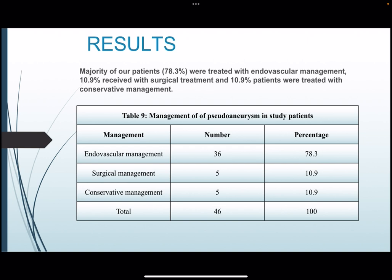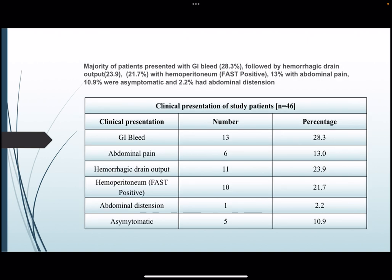Results: The majority of patients were treated with endovascular management at 78.3%; 10.9% received surgical treatment and 10.9% were treated with conservative management. The majority of patients presented with GI bleed at 28.3%, followed by hemorrhagic drain output in 23.9% of patients. 27.7% presented with hemoperitoneum, 13% with abdominal pain, 10.9% were asymptomatic, and 2.2% had abdominal distension.